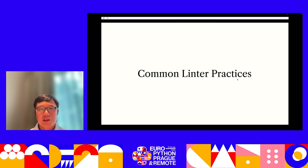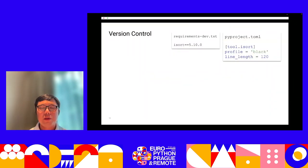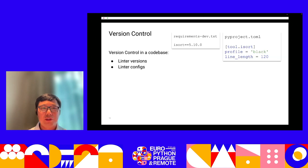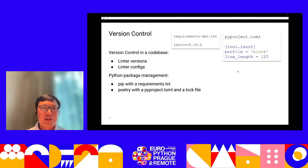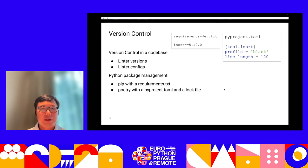We use a lot of linters and each has a lot of config. In general, we configure our linters using version control. We add linter versions and configs into our codebase. We can use a package management tool like pip or Poetry to specify the linter version — for example, specifying isort version in a requirements file. We also store the config in pyproject.toml so when we run linters, we use the specific config from the codebase.